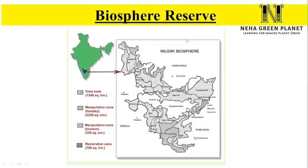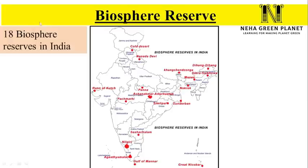Biosphere reserves can contain multiple national parks. For example, the Nilgiri Biosphere Reserve of South India has many national parks including Nagarhole and Bandipur National Parks. Within it there are core zones where no human activity is permitted, manipulation zones where forestry and tourism are allowed, and restoration zones to replant trees and restore ecosystems. In India there are 18 biosphere reserves — for example, Nanda Devi in Uttarakhand, Nilgiri in South India, Rann of Kutch in Gujarat, Gulf of Mannar, Great Nicobar, and Sundarbans.